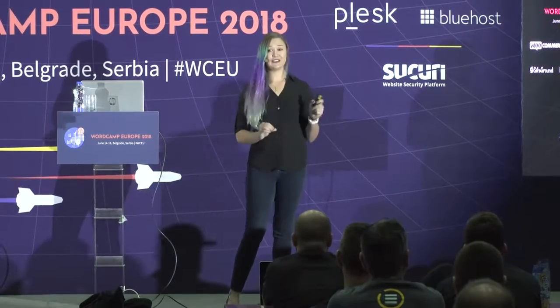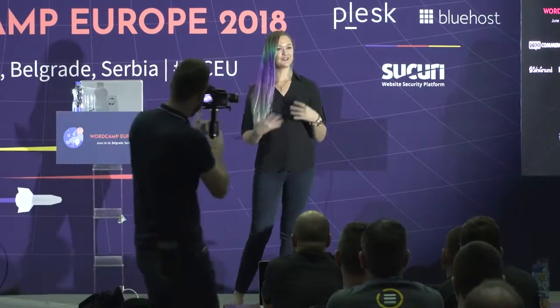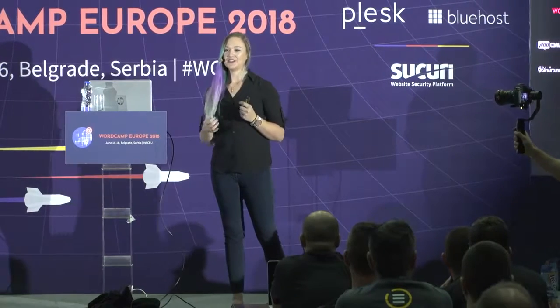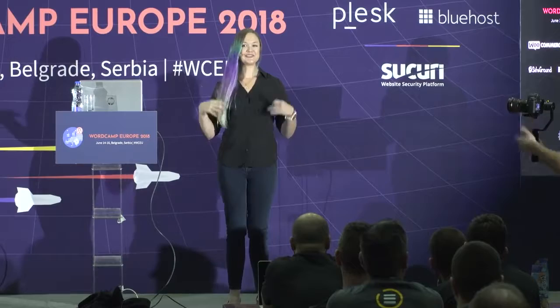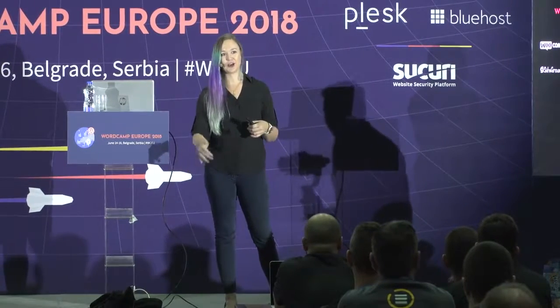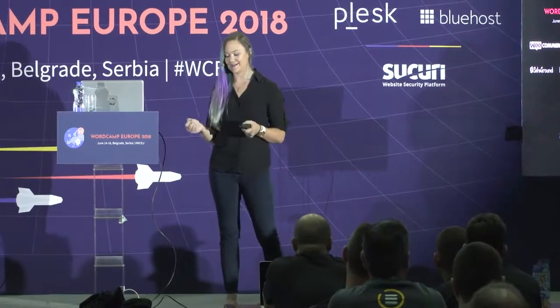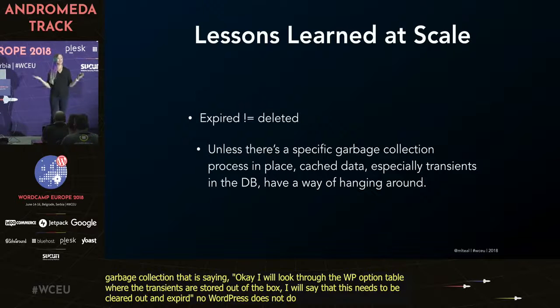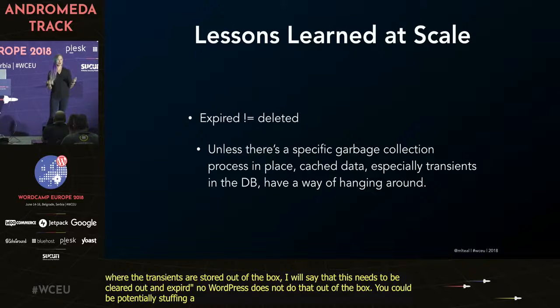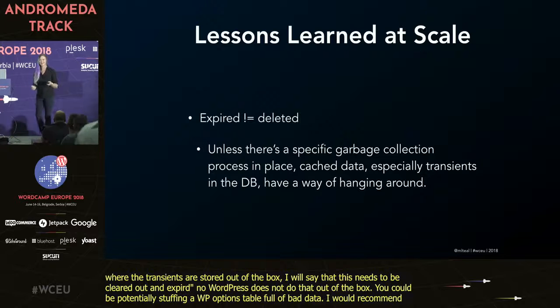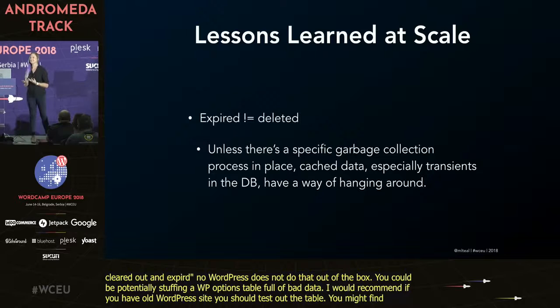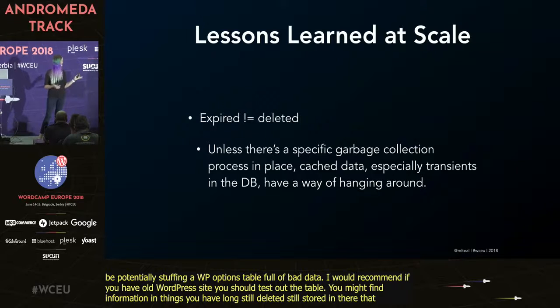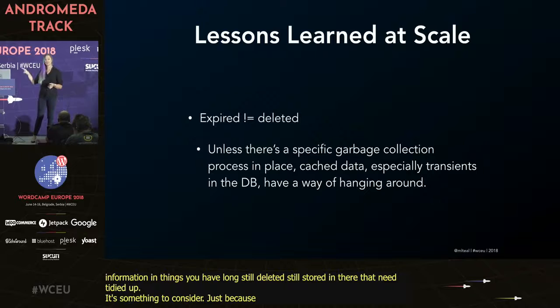Expired does not equal deleted. When you've got WordPress out of the box utilizing the Transients API, you're saving things into cache with a key-value pair and an expiration date. If you then change your code and that value never gets called again, WordPress doesn't have any garbage collection that looks through the WP options table and says this needs cleared out. WordPress does not do that out of the box. So you could potentially be stuffing the WP options table full of bad data that's not even called anymore. If you've got an old WordPress site, check out that table — you might find information you've long since deleted still stored in there. Just because something is expired doesn't mean that data isn't hanging around somewhere taking up space.